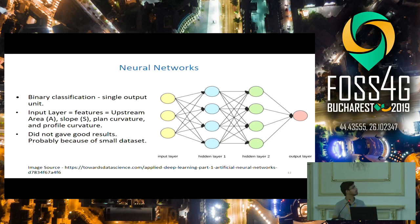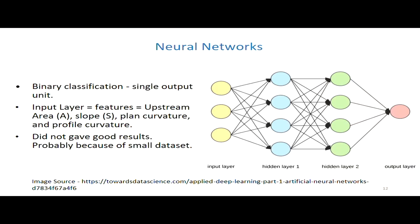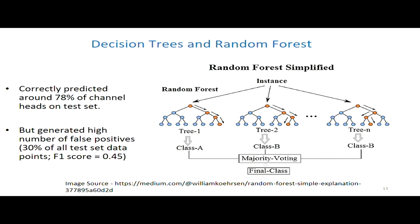The first approach we tried was neural networks. The features — slope, upstream area, and topographic curvature — were provided in the input layer. We used Keras to implement this binary classification problem, so the output unit is only one: either it is a channel head or not. However, neural networks did not give very good results, probably because it was a very small dataset, and neural networks are mostly useful when we have a vast amount of data. So we next tried decision trees and random forest.